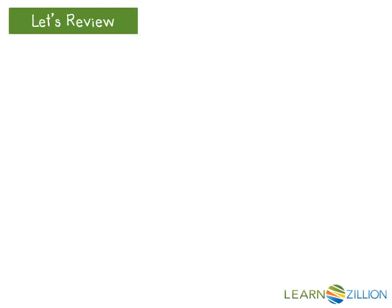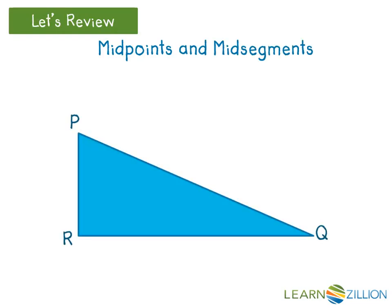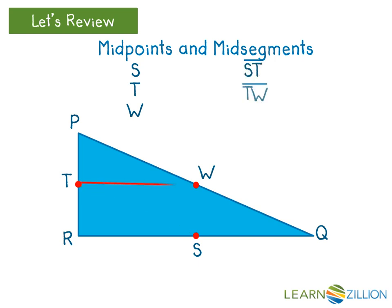Let's review. A mid-segment is the point on a segment that cuts the segment into two congruent segments. Point S, point T, and point W are midpoints of their respective sides. This means that segments ST, TW, and WS are mid-segments for triangle PQR.